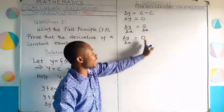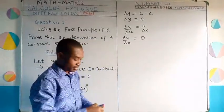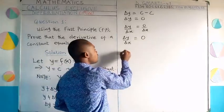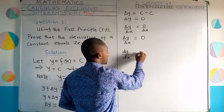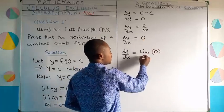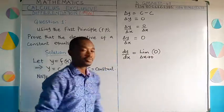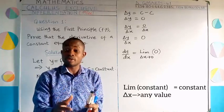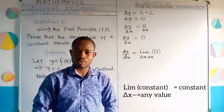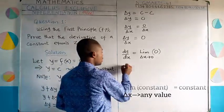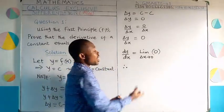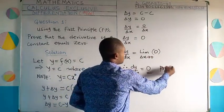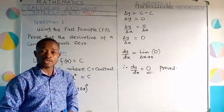At this point we have cleared delta x from the right hand side, so we can now take the limit. Taking the limit of the right hand side as delta x approaches zero gives us dy/dx. So dy/dx equals the limit of zero as delta x tends to zero. The limit of a constant is still that constant, so the limit of zero is zero. Therefore dy/dx equals zero — proved.